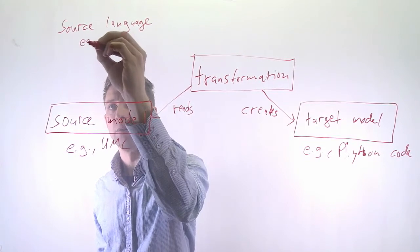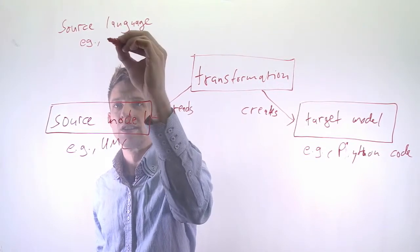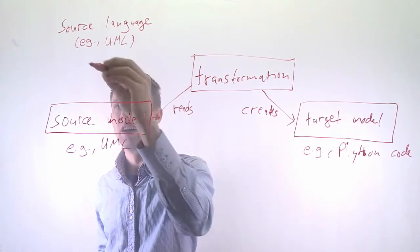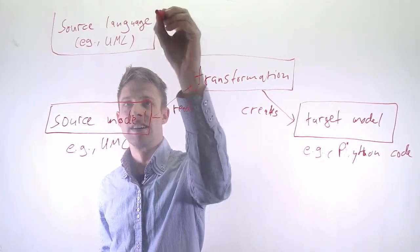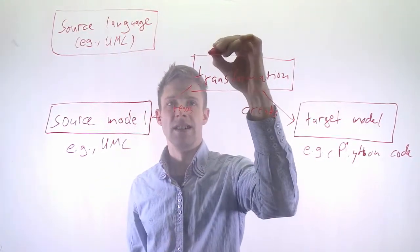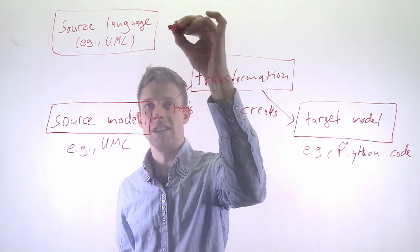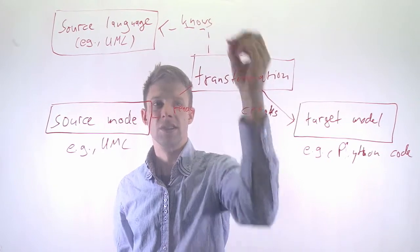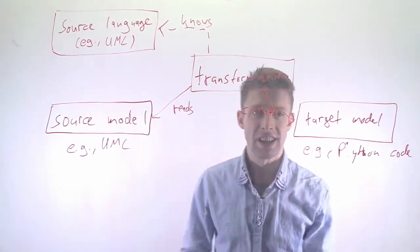And that could, for example, be the UML language. It knows the UML language so it can create. And this transformation basically understands. It knows the source language. And the same goes for the target model. This is in a certain language. So there is some kind of target language.